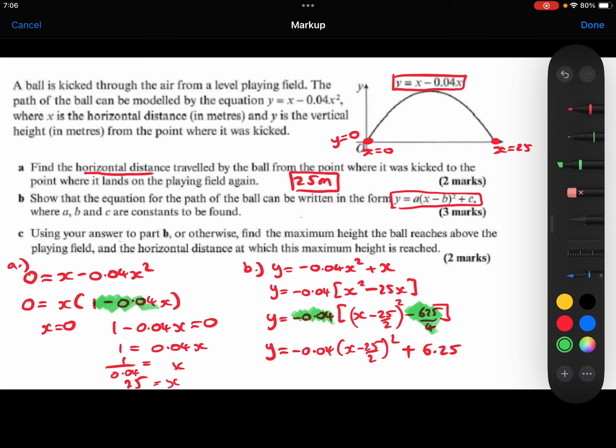And there we go. I have written it in the desired form, where the a is the minus 0.04, the b is the 25 over 2, and the c is the 6.25. So that is my answer to part b.